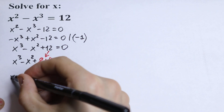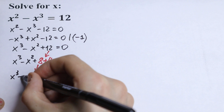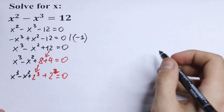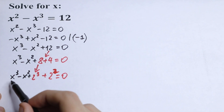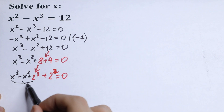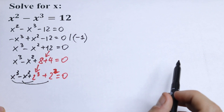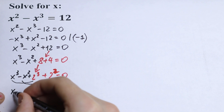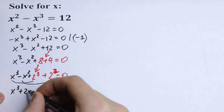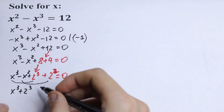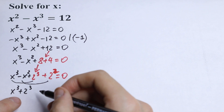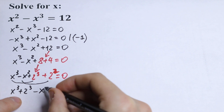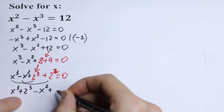We will have x cubed minus x squared. What we're going to do next? Let's group our x cubed with 2 cubed and x squared with 2 squared. So we will have x cubed plus 2 cubed, and in our case we will have minus x squared plus 2 squared.